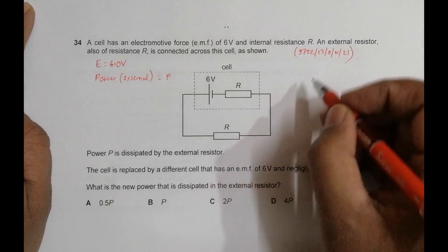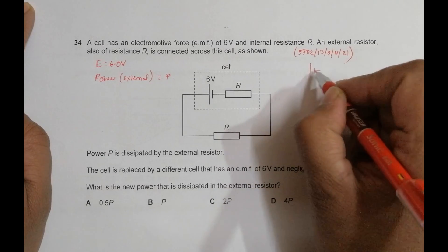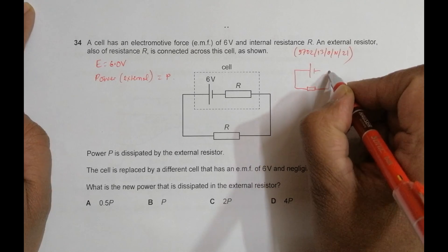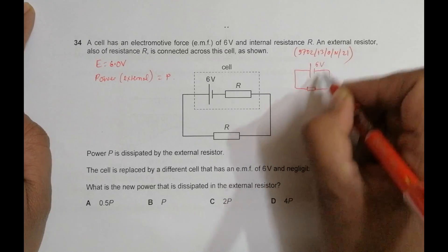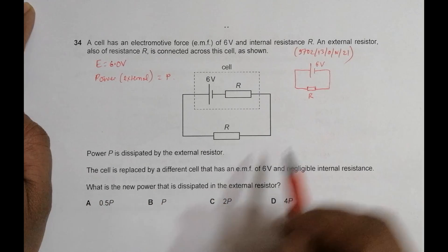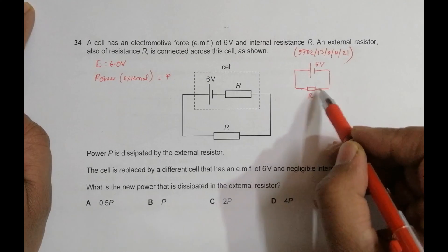So now we have another cell with 6 volts and negligible internal resistance. We need to find the new power dissipated in the external resistor.